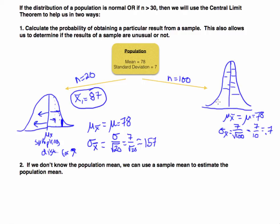If you know the population and the sample size, you should be able to draw a picture of the sampling distribution. The mean will match the population mean, and the standard error — which is equivalent to the standard deviation of the sampling distribution — is found by taking the population standard deviation and dividing it by the square root of the sample size. These are essential pieces of information.